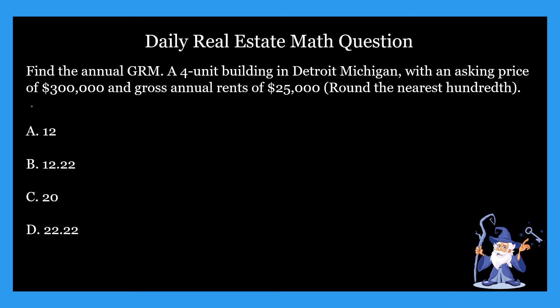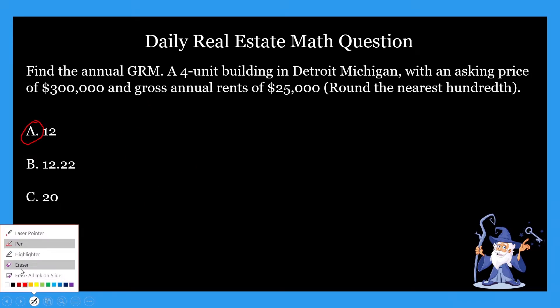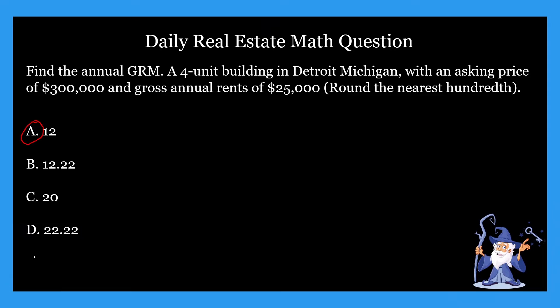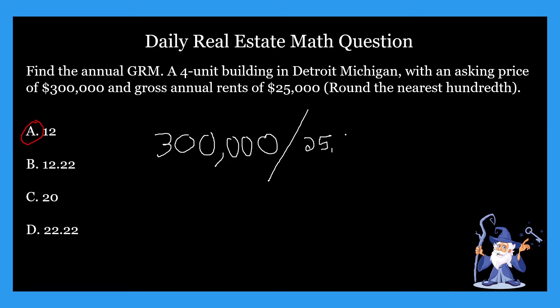So what is our answer for this one? It's going to be A — that's right, it's 12. So how did we get that? In our GRM problems, you should know the formula by now. The formula is: GRM equals property price divided by gross rental income. So in our case, we take $300,000 and divide that by $25,000, which gives us 12.